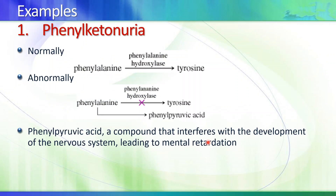A very famous example of autosomal recessive disorder is phenylketonuria (PKU). This is a disease caused by a metabolic defect in the synthesis of tyrosine from phenylalanine — the gene encoding phenylalanine hydroxylase is defective. As a result, phenylalanine accumulates and converts into phenylpyruvic acid, which accumulates in different organs including the nervous system, leading to mental retardation. That's why it is now standard to screen babies once born for PKU, because treatment involves limiting phenylalanine intake.